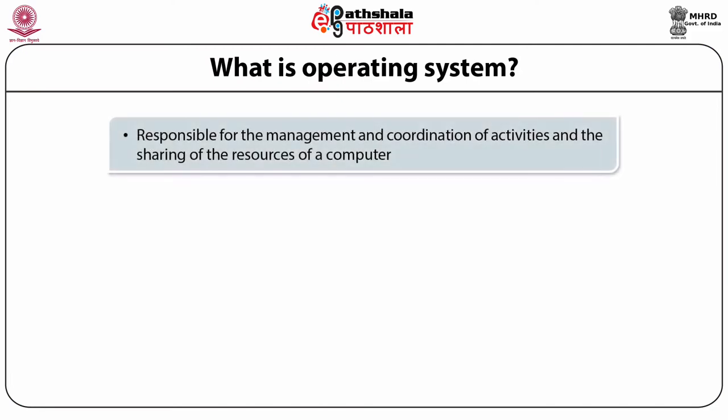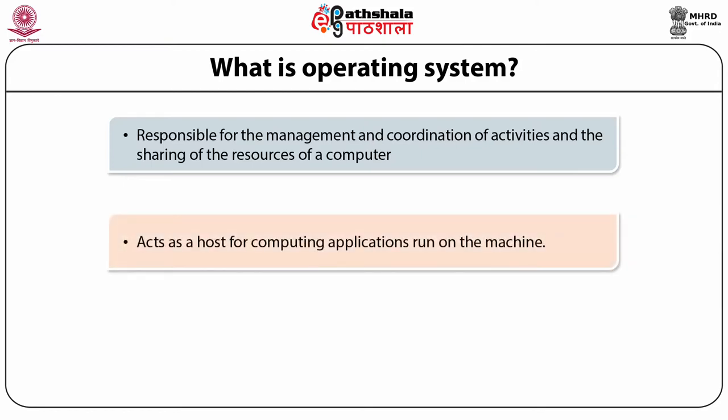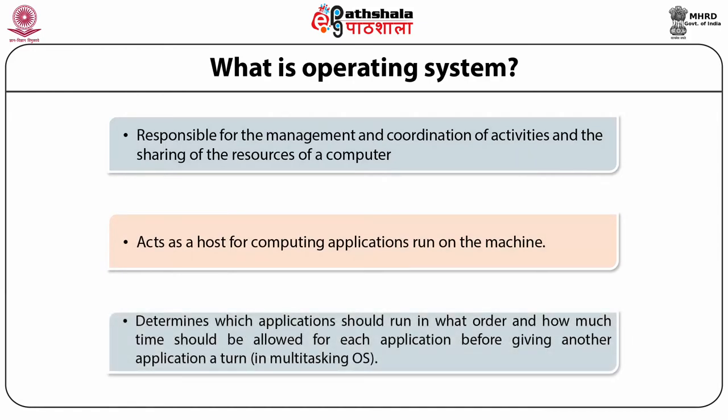A different view of the operating system emphasizes the need to control the various input and output devices as well as user programs. So an operating system is a control program which manages the execution of user programs to prevent errors and improper use of the system, specifically concerned with the operation and control of the IO devices. The operating system is responsible for the management and coordination of all activities as well as sharing the resources of computers. It determines which application should run in what order and how much time should be allotted for each application — specifically in the case of a multi-tasking operating system.